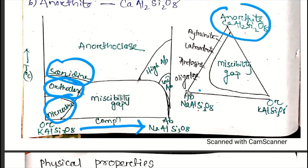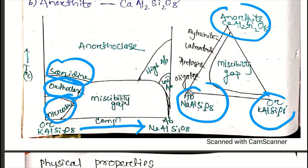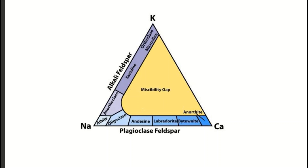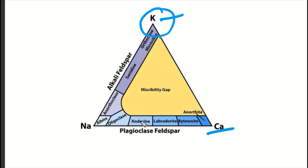The triangular diagram has apices: Anorthite, Albite, and Orthoclase. Albite to Anorthite composition change shows Na to Ca substitution, giving Oligoclase, Andesine, Labradorite, and Bytownite. The K-feldspar side shows Albite, Anorthoclase, Sanidine, Orthoclase, and Microcline depending on temperature.